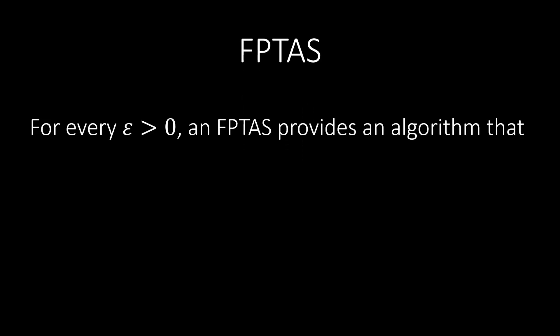For any epsilon greater than 0, an FPTAS provides an algorithm with two properties. Firstly, the algorithm is a 1 plus epsilon approximation. For example, assume epsilon is 5%. Then this means that the algorithm produces a solution that is at most 5% worse than the optimal solution.